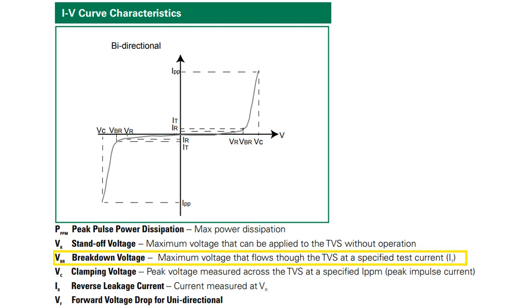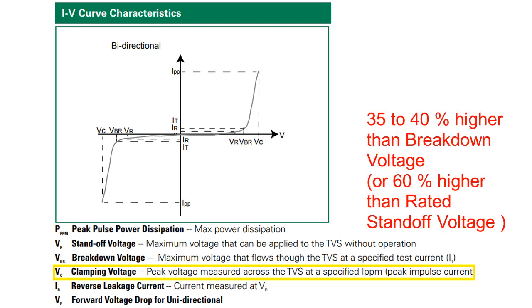The next higher voltage characterized for TVS diode is the breakdown voltage VBR. It is typically 10-15% above VWM and is the voltage that TVS devices go into avalanche similar to a Zener diode. The highest voltage parameter specified for a TVS diode is VC or clamping voltage under high current pulse conditions. It is typically 35-40% higher than VBR, or 60% higher than VWM, and represents the maximum clamping voltage during the specified peak impulse current IPP.